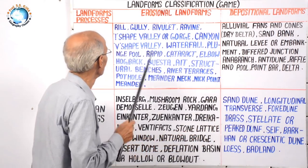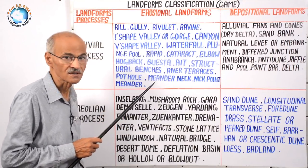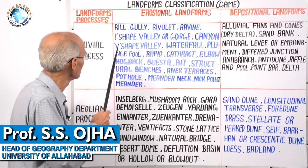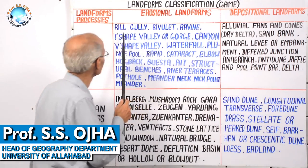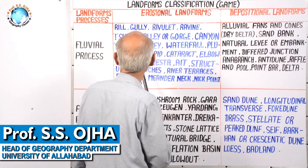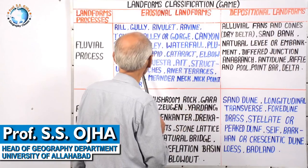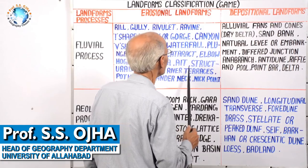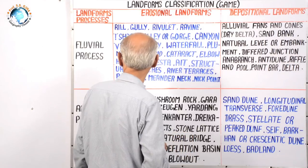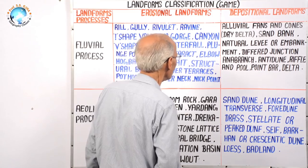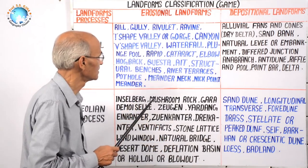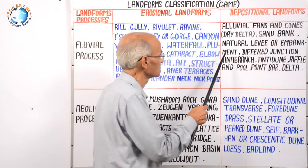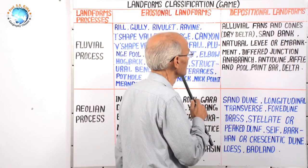These landforms have been discussed in detail while studying the processes. For example, when studying the fluvial process and landforms, we observe all the erosional landforms from river source to its mouth. From the river source the first landform is rill, then gully, ravine, V-shaped valley, gorge, canyon, waterfall, plunge pool, rapids, elbow, hogback, cuesta, structural benches, river terraces, pothole, meander neck, nick point, and meander — written in sequence from source to last erosional landform.